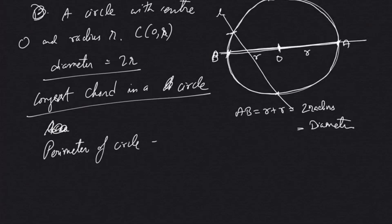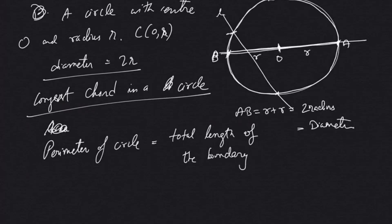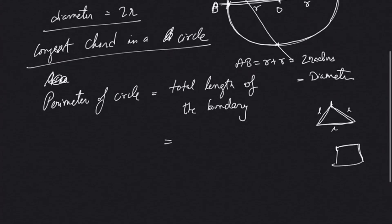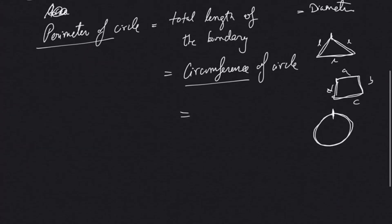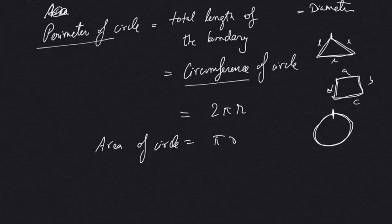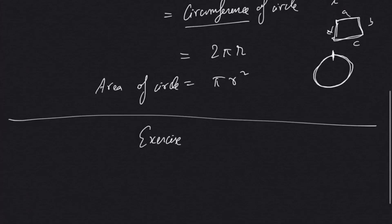Now let's look at the perimeter of a circle. The perimeter is simply the total length of the boundary for any figure. For a triangle, we add the three sides; for a quadrilateral, we add all four sides a plus b plus c plus d. Similarly, for a circle, if we trace the boundary starting from any point, that total length is called the circumference. So perimeter and circumference have the same concept for a circle. The formula is: circumference = 2πr, and area of a circle = πr².